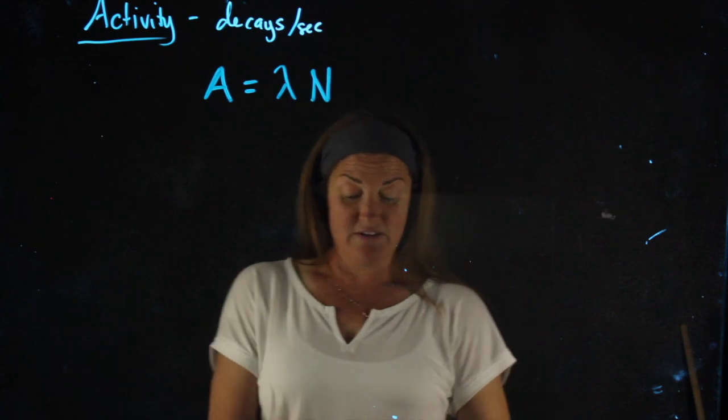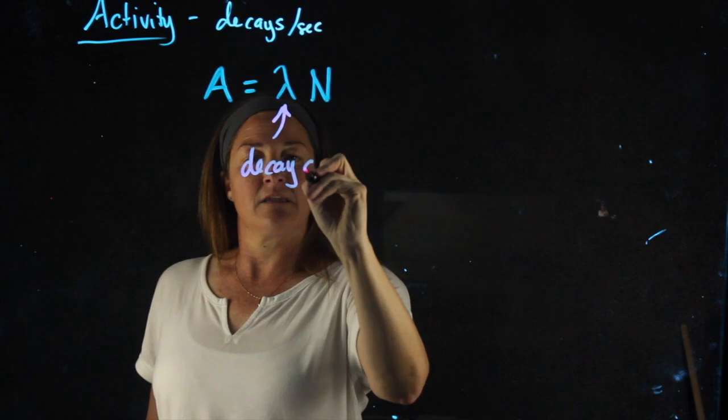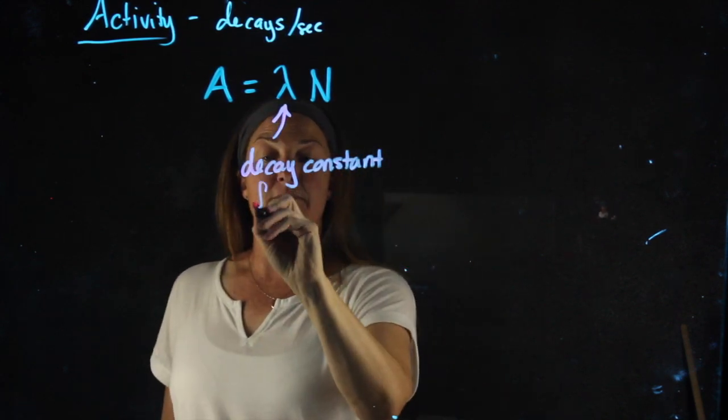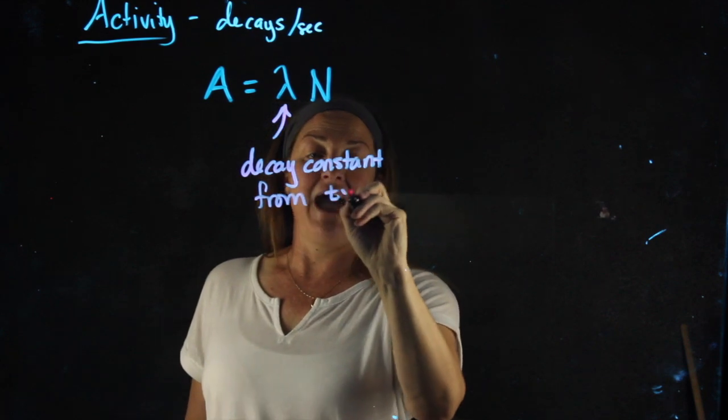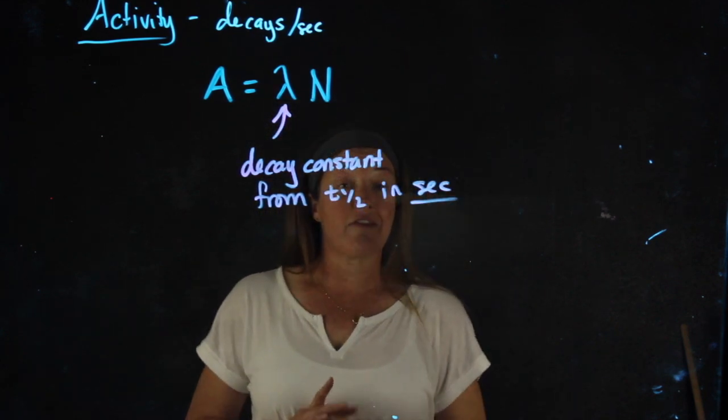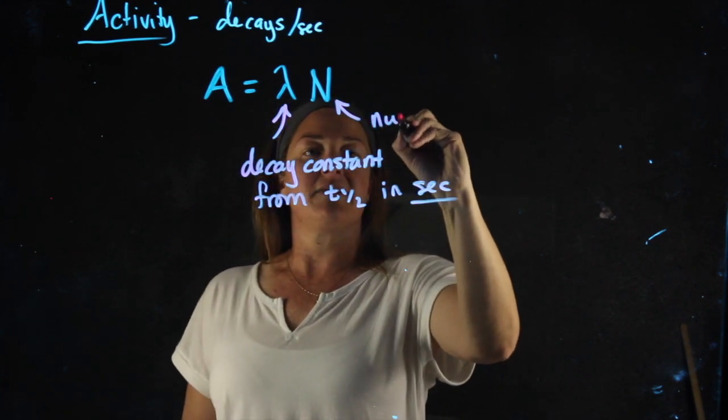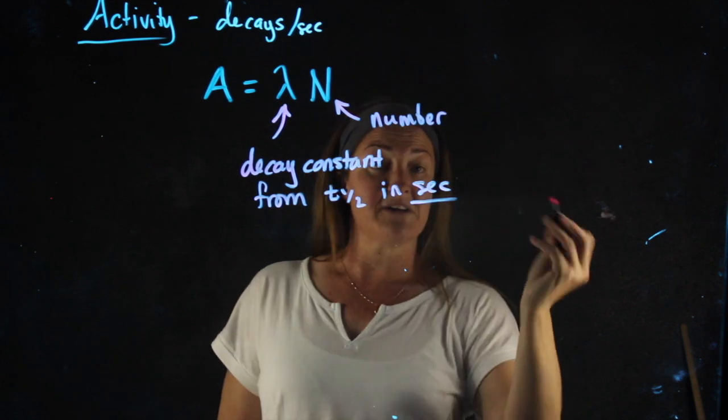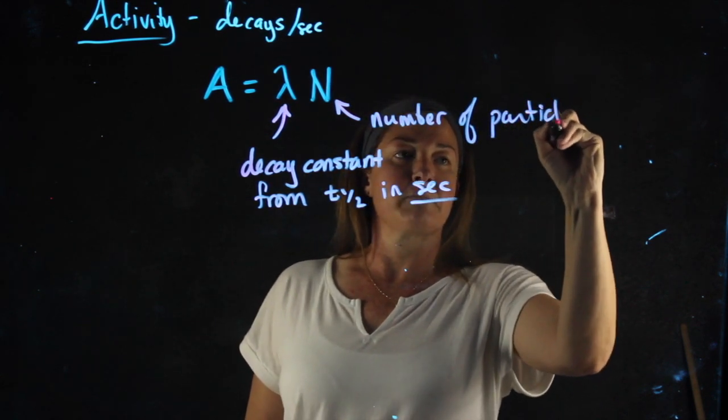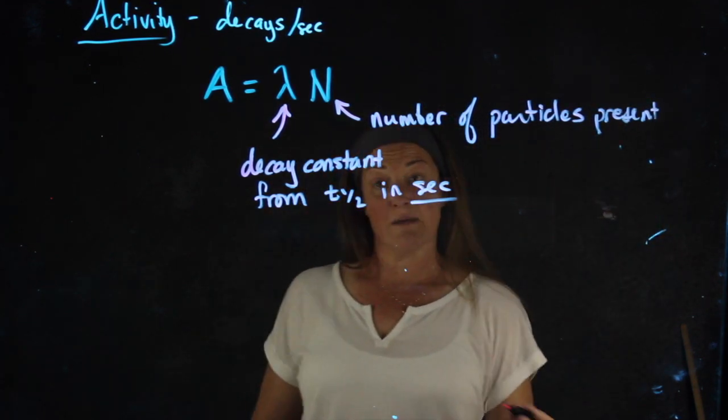Here, units are definitely going to matter. This is the decay constant, and here it has to be determined from the half-life in seconds. So if your half-life is in units other than seconds, it needs to be converted. N is going to be the number of radioactive particles present, which we're going to get from moles and from grams.